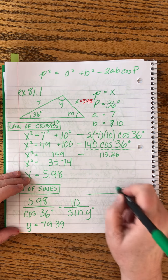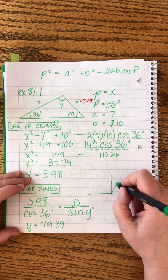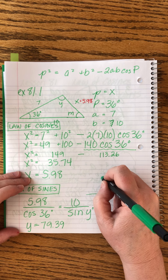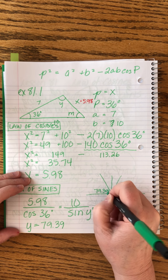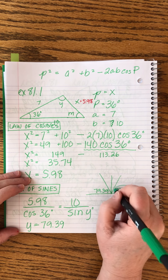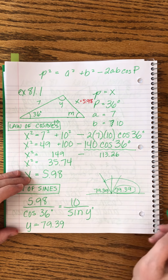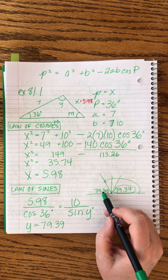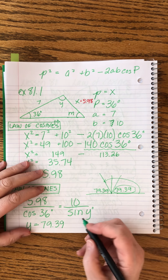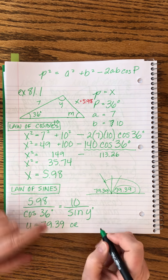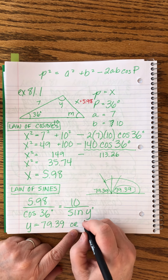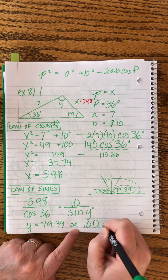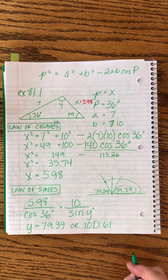We do the cross multiplication and calculation to get y equals 79.39 degrees. But remember, this is an ambiguous angle. The second quadrant possibility is 180 minus 79.39, which equals 100.61 degrees. Those are our two choices for angle y.